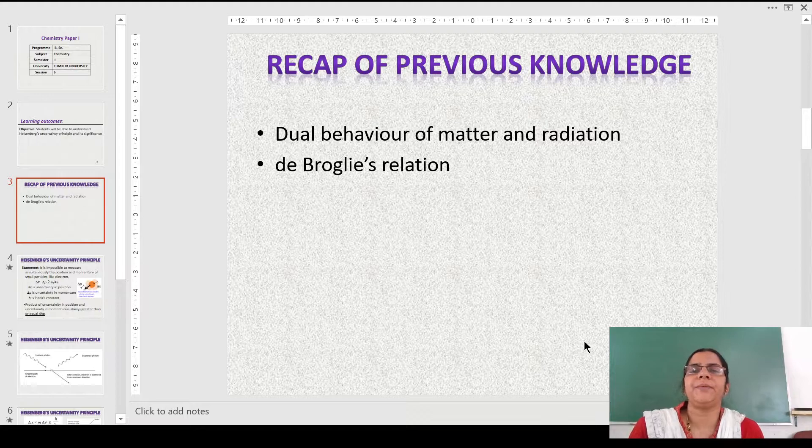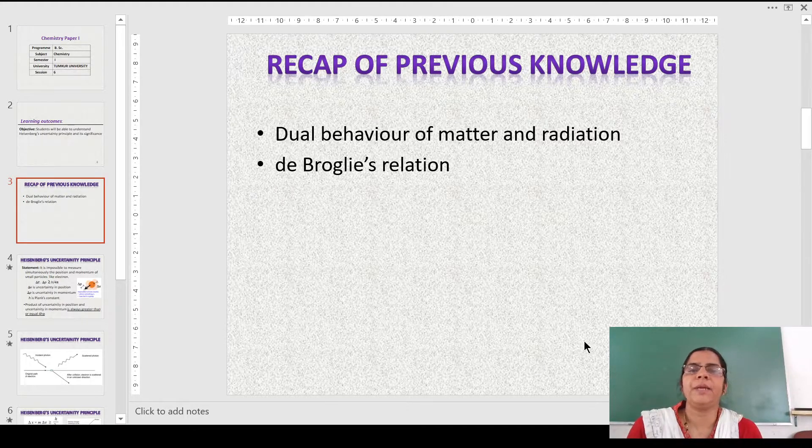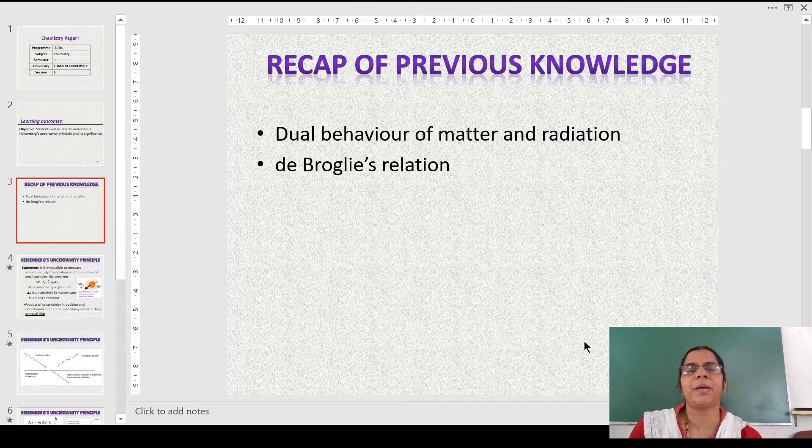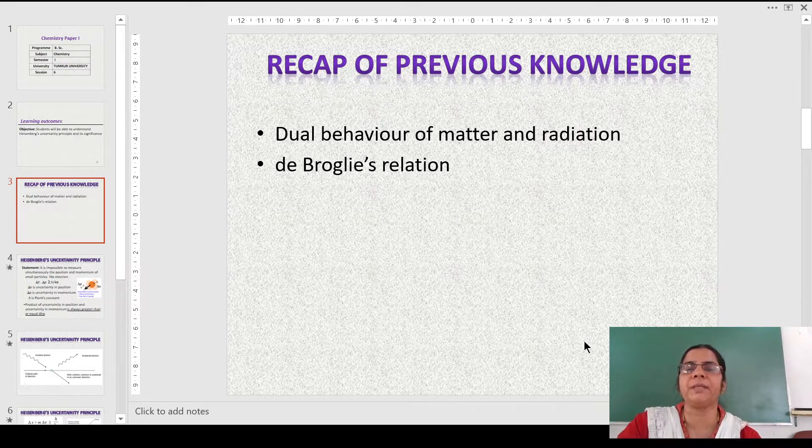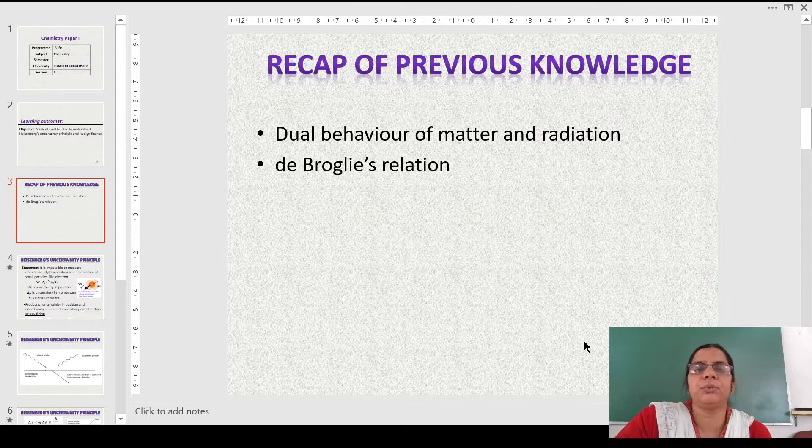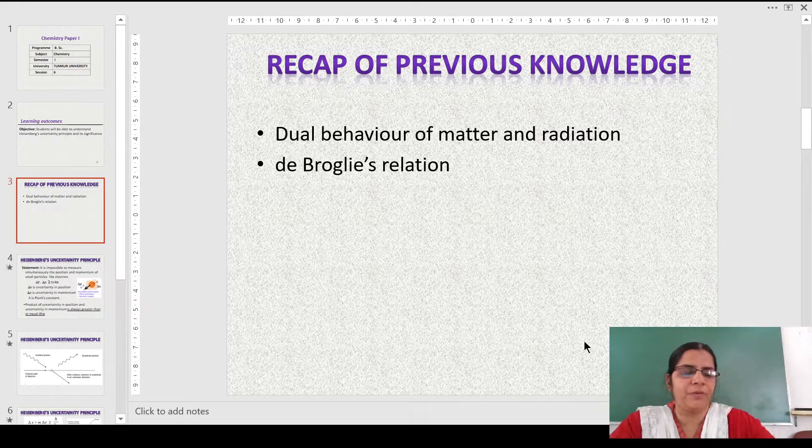Before going into this video, let us have a recap of the previous knowledge. We learned that matter has a dual nature - it behaves both as matter as well as radiation. Therefore, it is associated with momentum as well as wavelength, and de Broglie gave a relationship between these two natures, that is, momentum and wavelength.